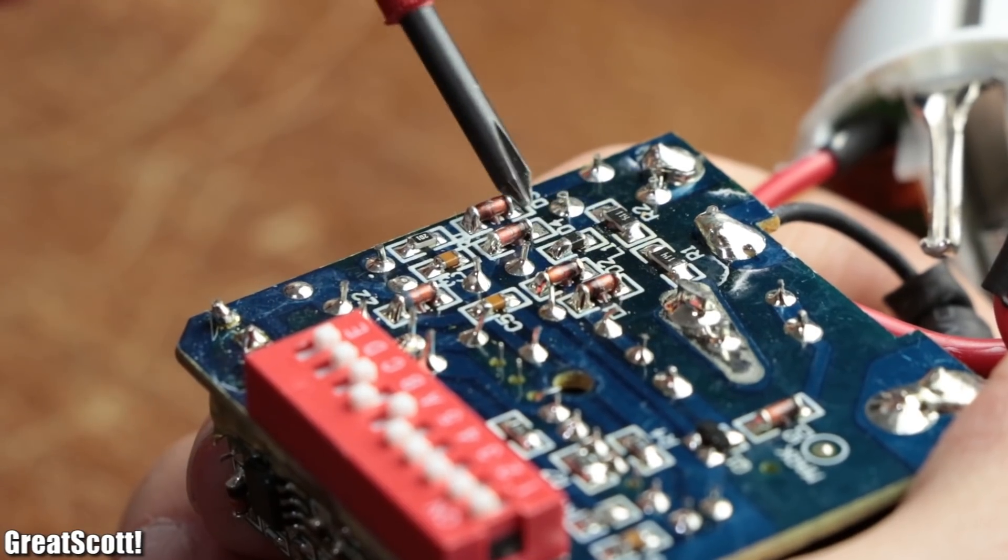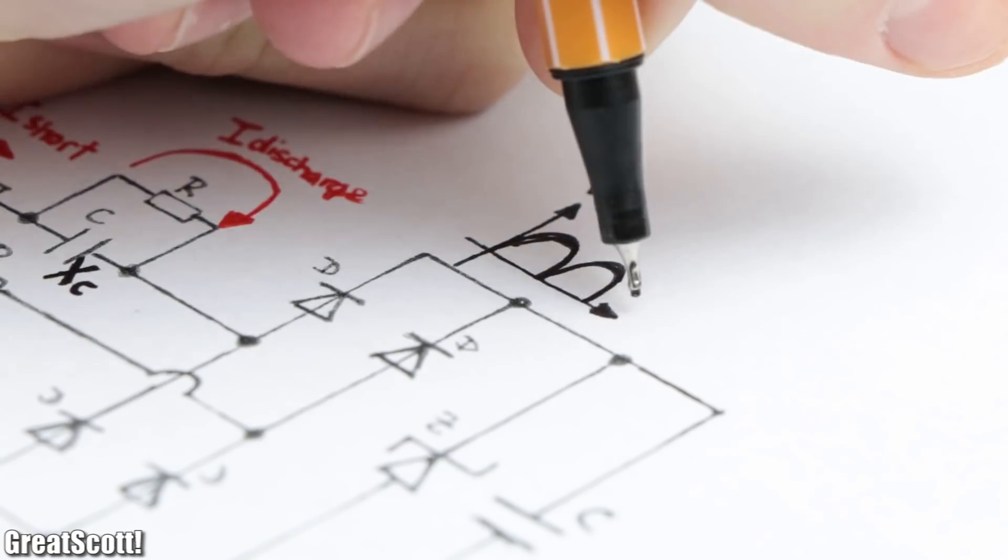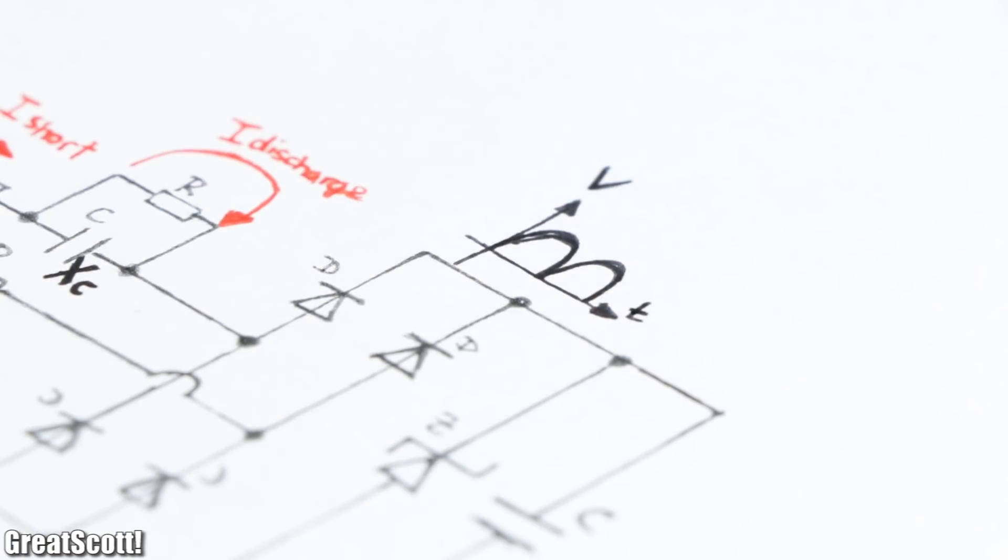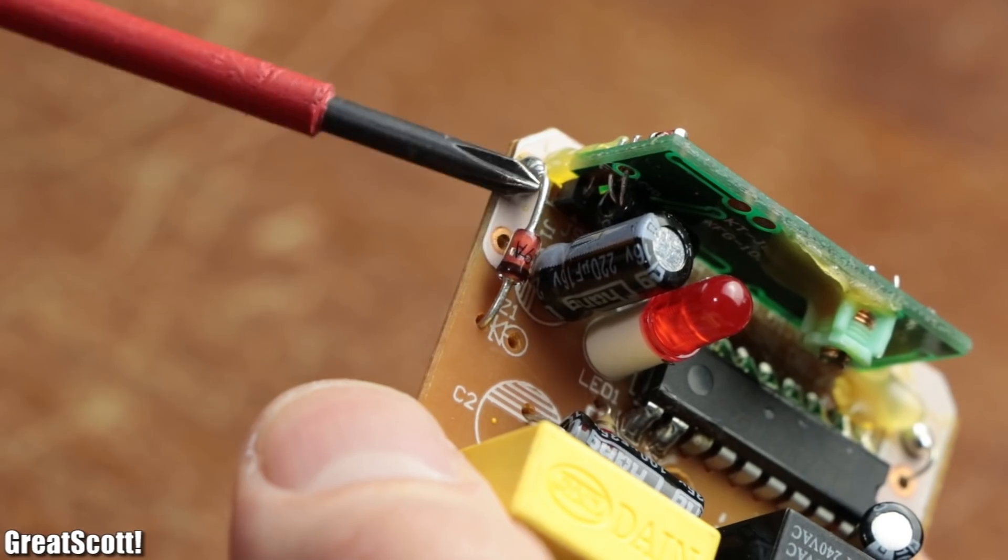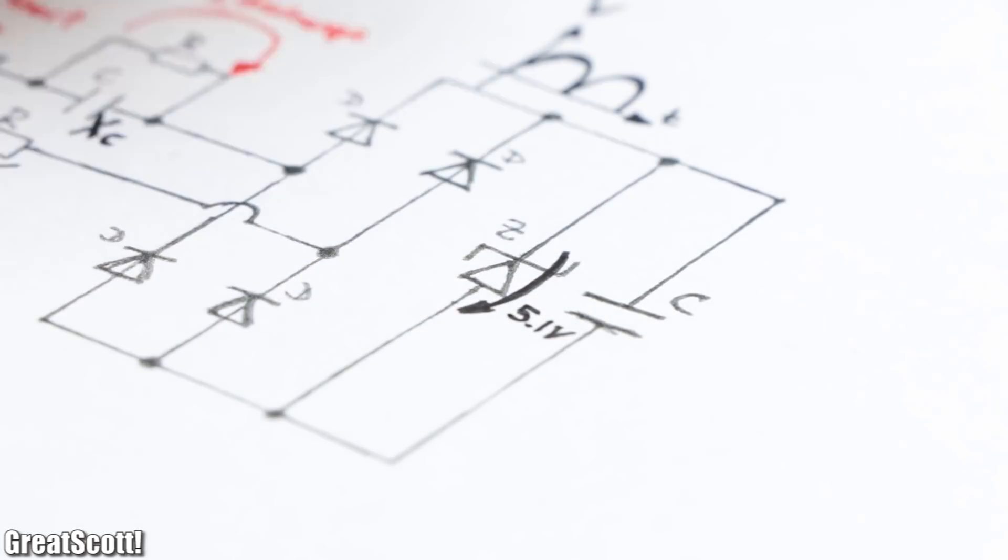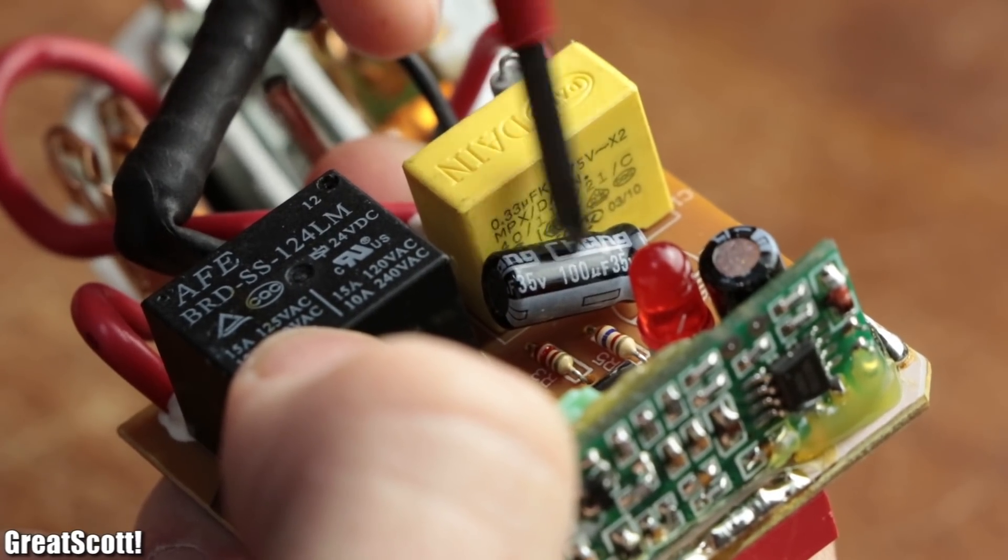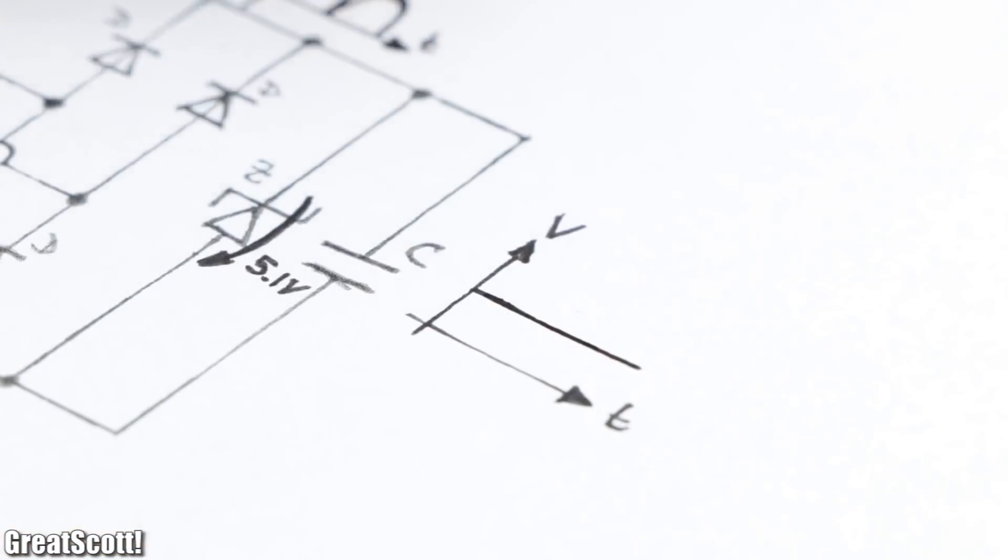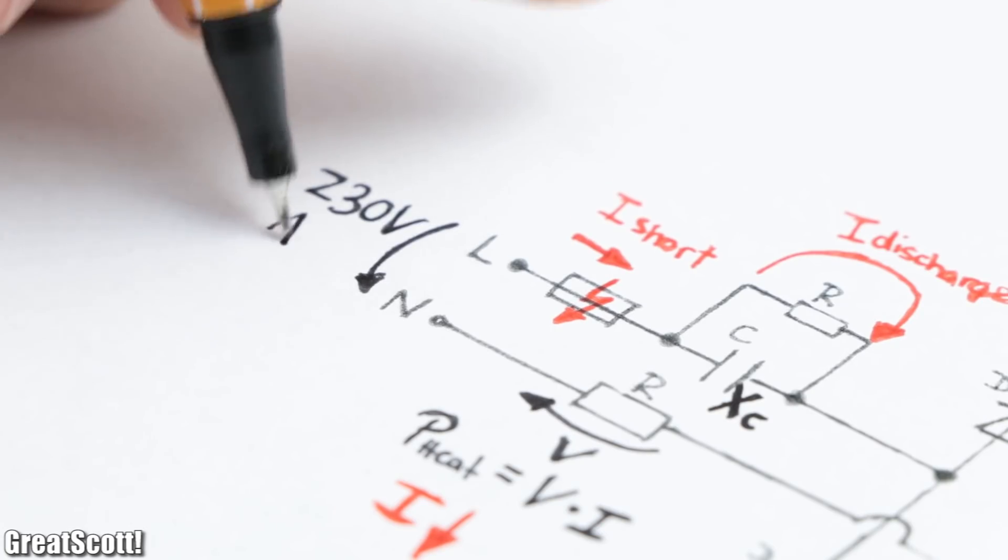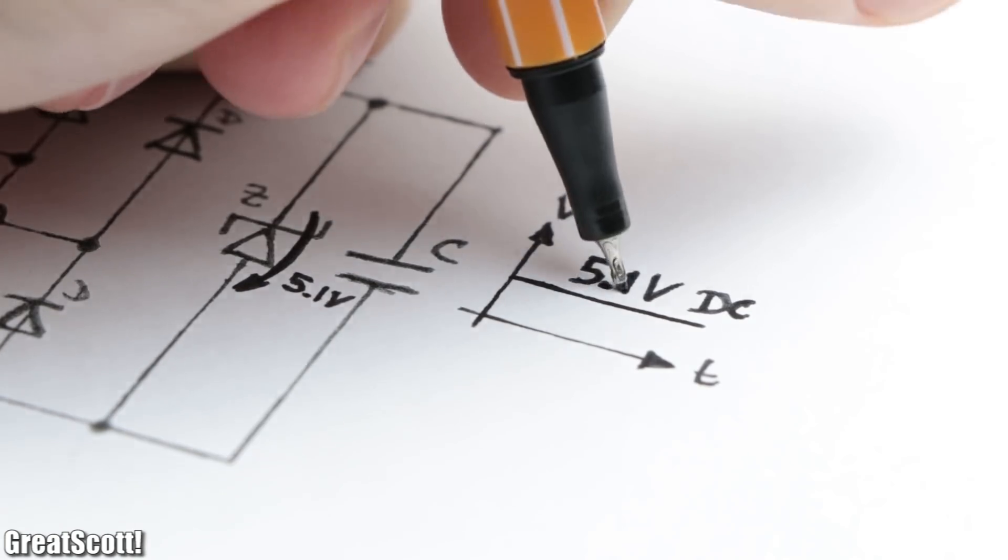The reduced mains voltage then connects to a full bridge rectifier which turns our voltage from AC to DC. Next, a zener diode clamps this DC voltage to a specific maximum like 5.1 volts, and at the end we got a big electrolytic capacitor to smooth everything out. And just like that, the circuit turned 230 volts AC to 5.1 volts DC.